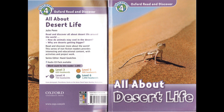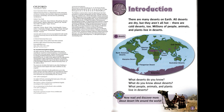Oxford Read and Discover Level 4: All About Desert Life. Introduction. There are many deserts on Earth. All deserts are dry. All kinds of people, animals, and plants live in deserts. What deserts do you know? What do you know about deserts?